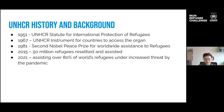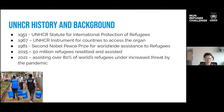The history of the UNHCR: in 1951 it was created by the statute for international protection of refugees. Since then, it has been an instrument for countries to access that statute and protect refugees. In 1981 the UNHCR won its second Nobel Peace Prize for its assistance to refugees worldwide. By 2015 it had helped 50 million refugees resettle, and by 2021 it's still assisting 80% of the world's refugee population.